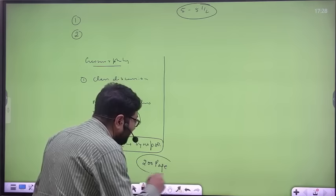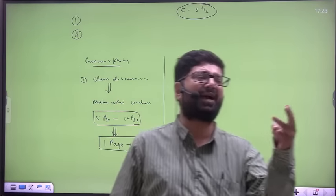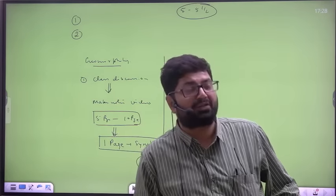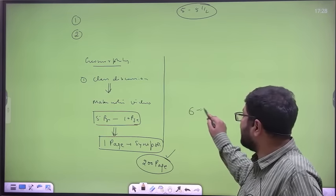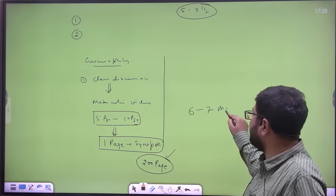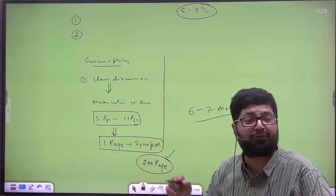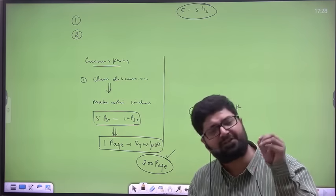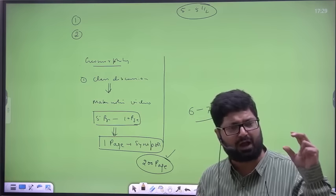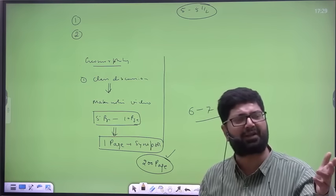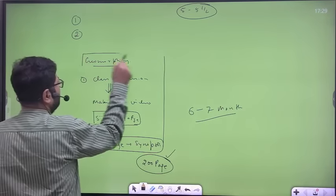Geomorphology will be reduced to ten to twelve pages, climatology to fifteen pages, and likewise the entire geography will be reduced to 200 pages. You can revise these 200 pages ten times — it will hardly take three days to revise entire geography. But to reduce geography to 200 pages by making a synopsis of every topic will take at least six to seven months. That is the only way out. Even in GS, you make synopsis — you cannot remember everything, you have to remember the crux and reproduce it in the exam.